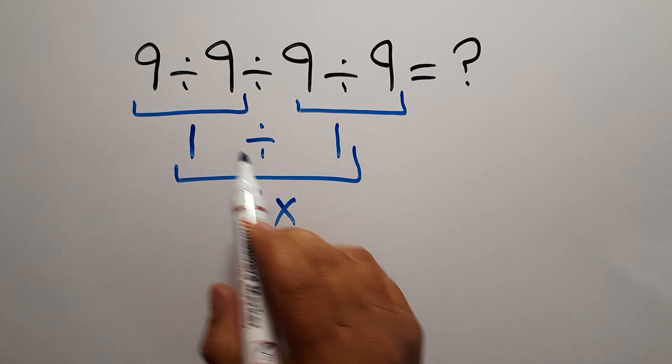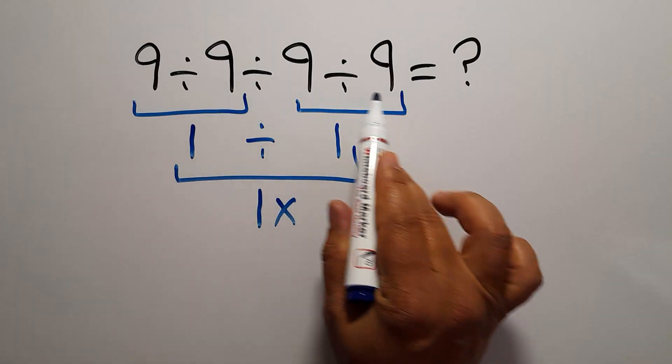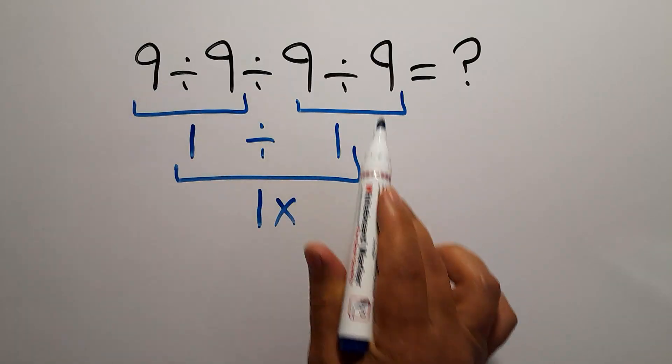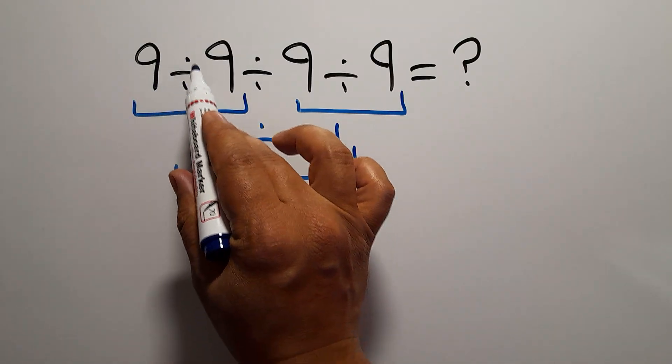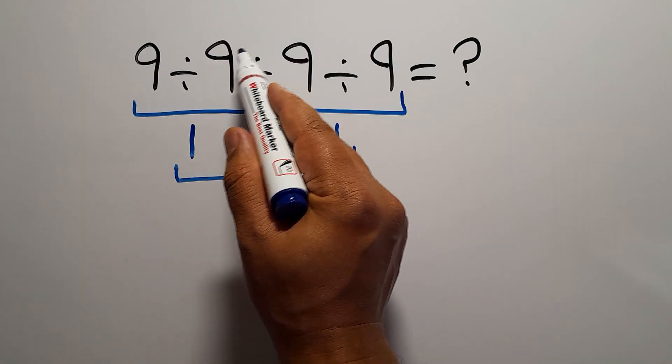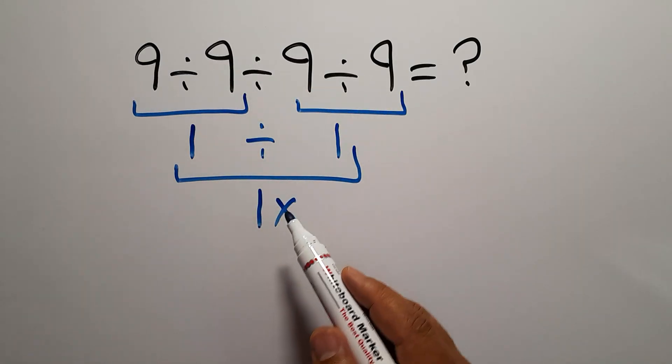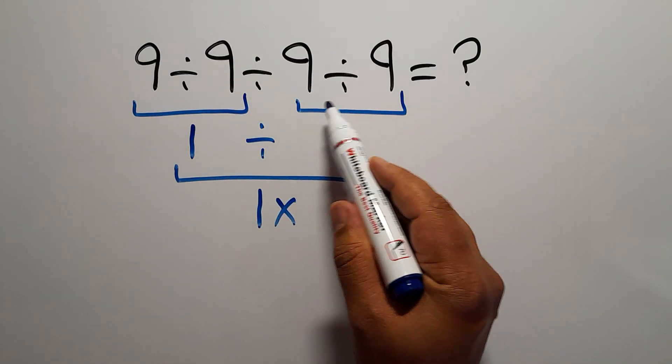when we have more than one division in an expression we have to work from left to right. So first we have to do this division, then this division, not this division, and finally we have to do this division.